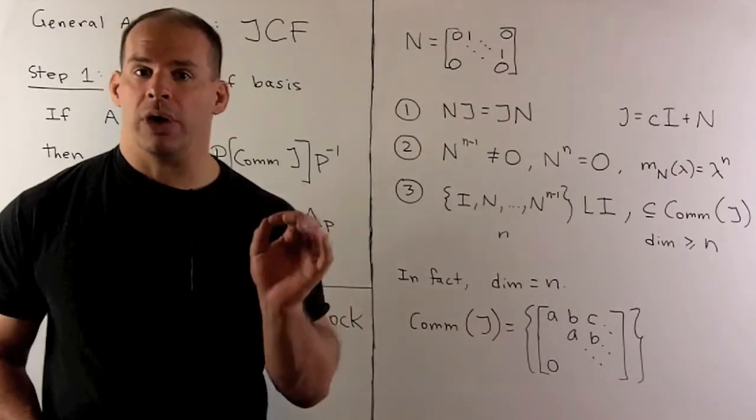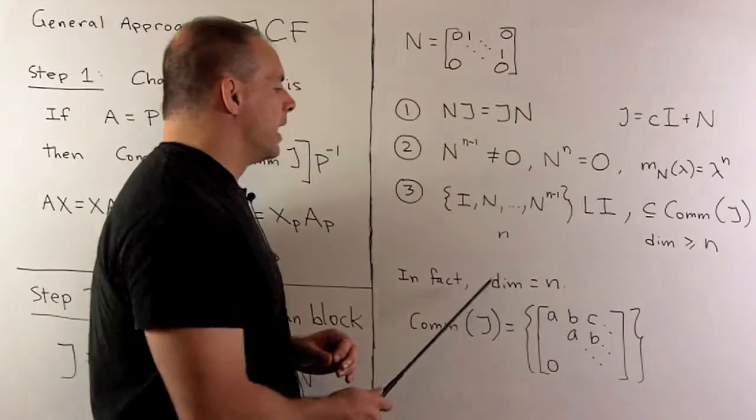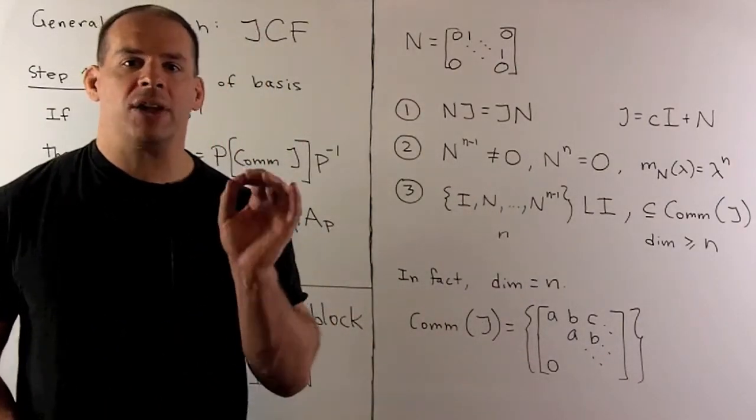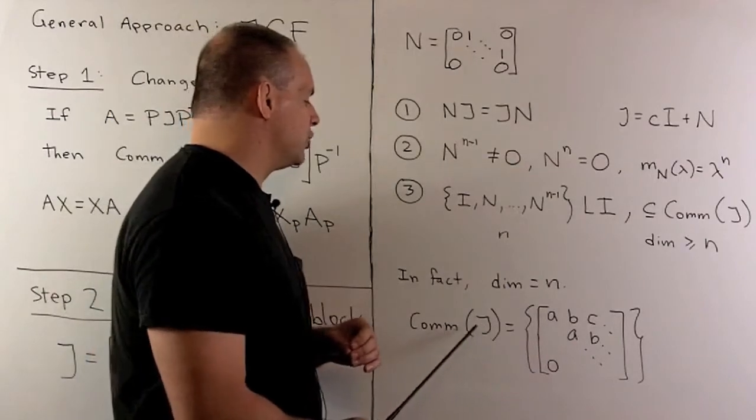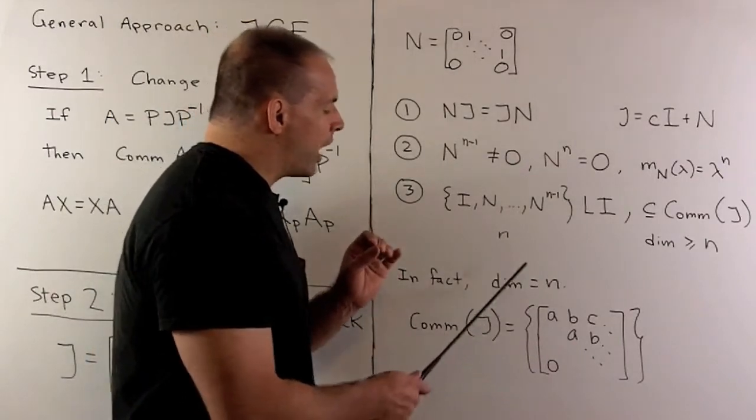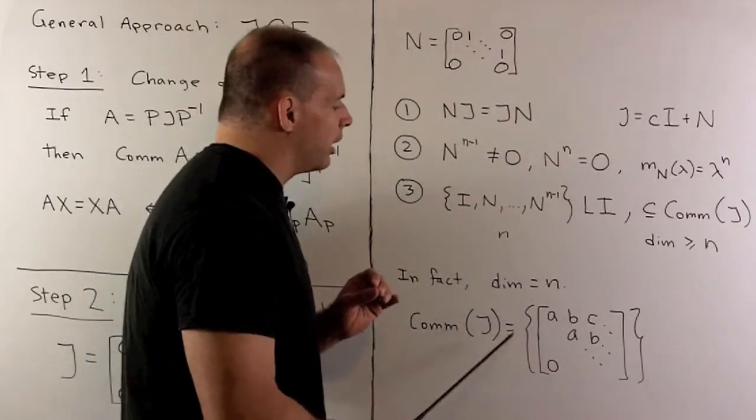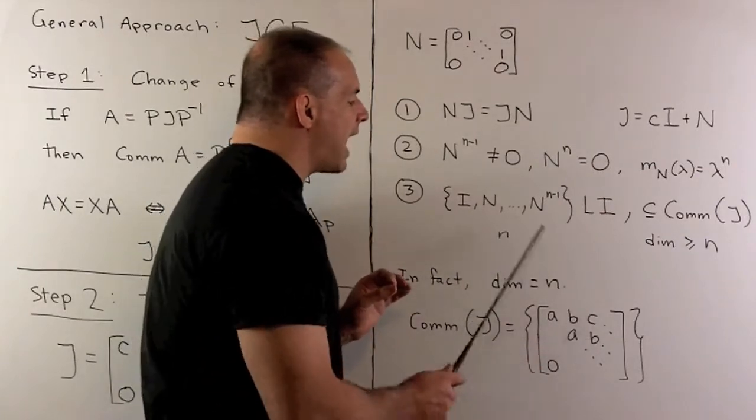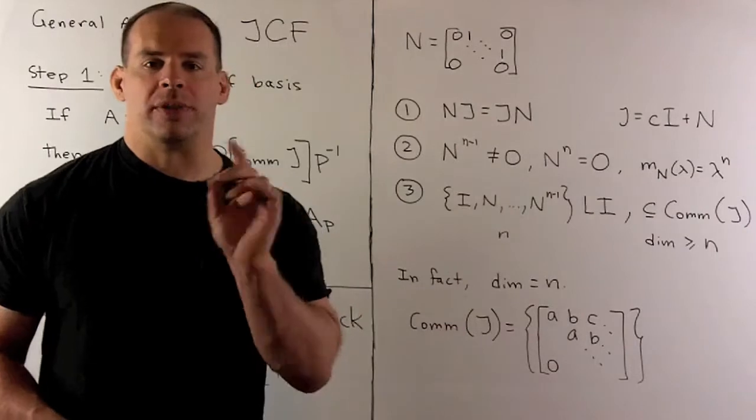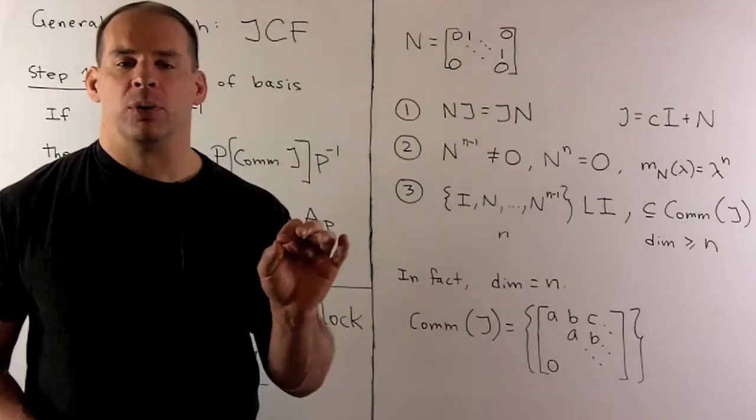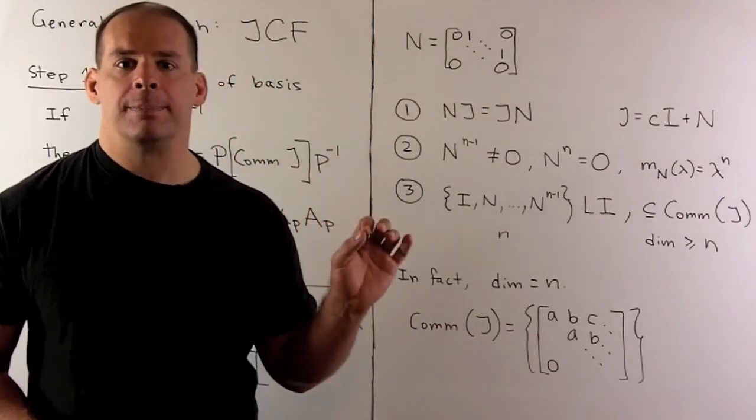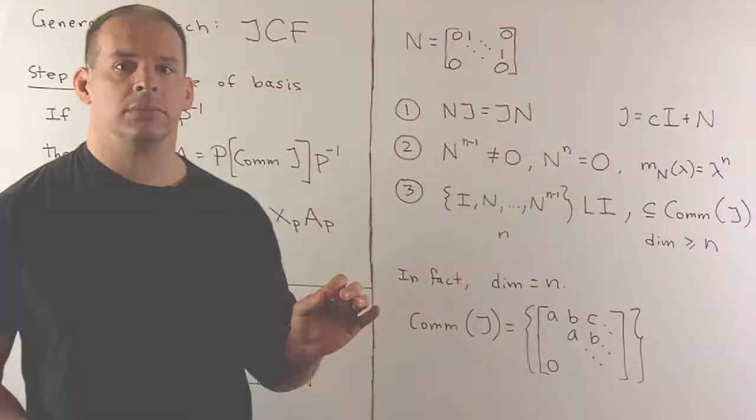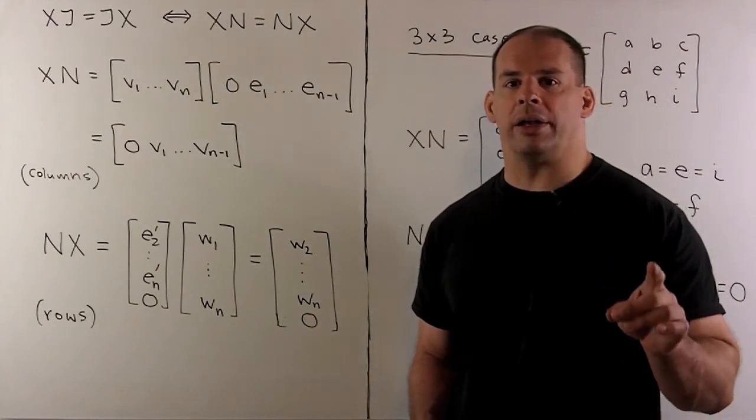It's worth noting, in this case, the dimension of the commutant is precisely N. So that'll say, we take the commutant of J. We can write each matrix in here in the form, okay, so we're going to have constants down every diagonal. If we're at the main diagonal or above, we can let that constant be any number we like. If we're below the main diagonal, it has to be zero.